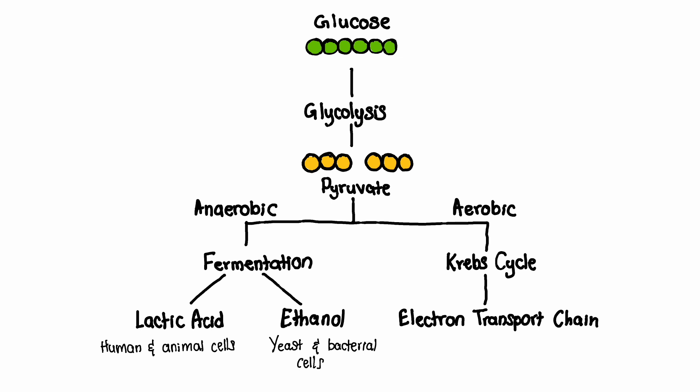If oxygen is present, pyruvate continues into the mitochondria for further energy production, while in the absence of oxygen, it is converted into either lactate in human and animal cells, or ethanol by yeast and other bacteria. The ethanol production is called alcohol fermentation.